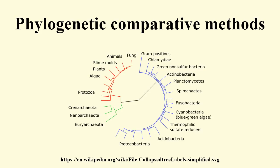Do groups of species that share a behavioral or ecological feature differ in average phenotype? For example, do carnivores have larger home ranges than herbivores? What was the ancestral state of a trait? For example, where did endothermy evolve in the lineage that led to mammals? Where, when, and why did placentas and viviparity evolve?